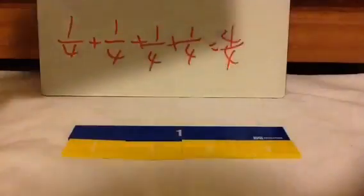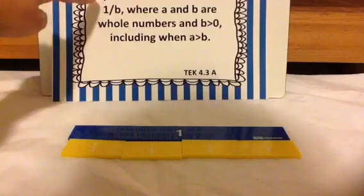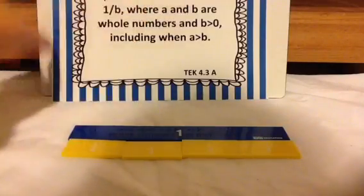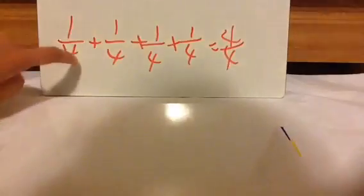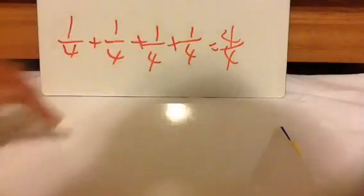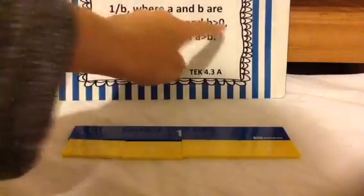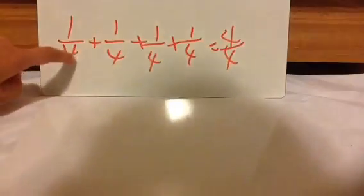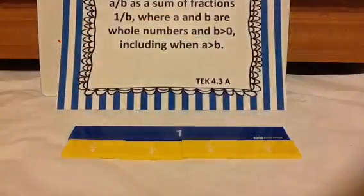And that's what this standard is talking about. You're representing a fraction A over B as a sum of fractions 1 over B, going piece by piece: 1 fourth plus 1 fourth plus 1 fourth plus 1 fourth. Where A and B are whole numbers and B is greater than 0 — B is the bottom number — and A can be greater than B, which I will talk about as I go through all these examples.